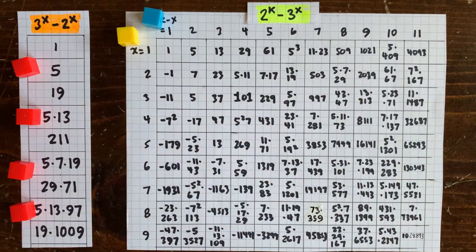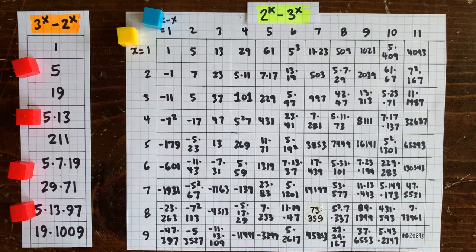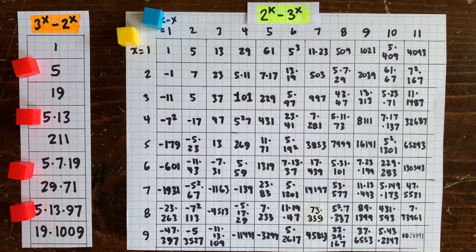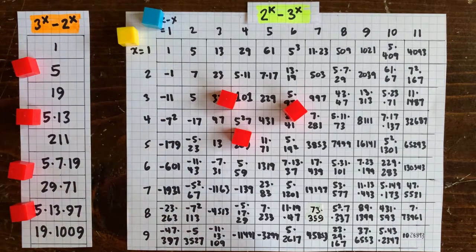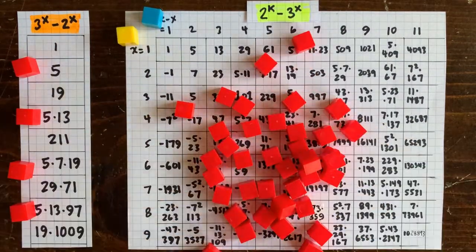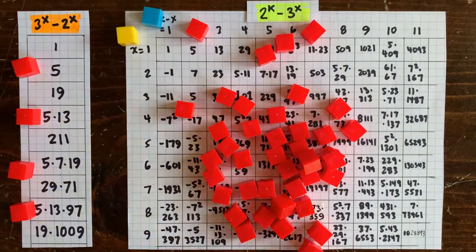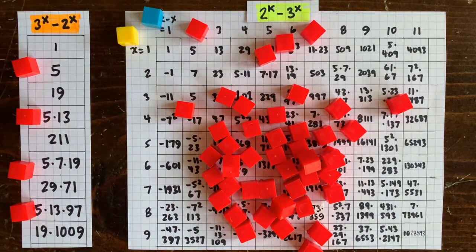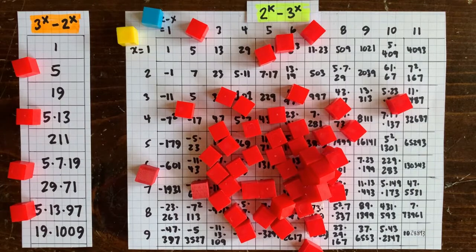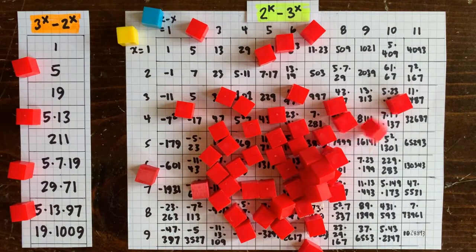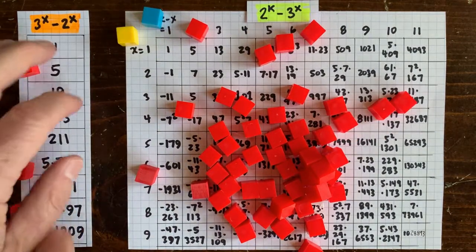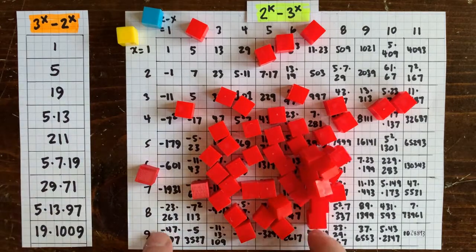If we kept going with all the primes, would we eventually cover every cell? Seems like we would. Except, remember, we only add a block if the factor is a spoiler. So, there could be some cell out there where none of the factors are spoilers. They all appear in 3 to the x minus 2 to the x. Then we'd have found a genuine circuit loop.